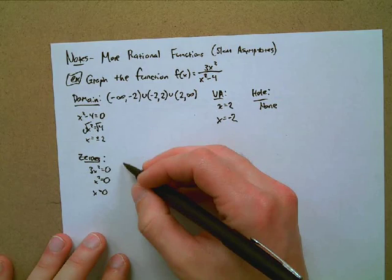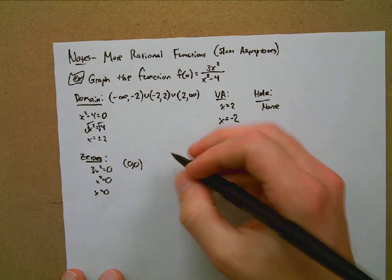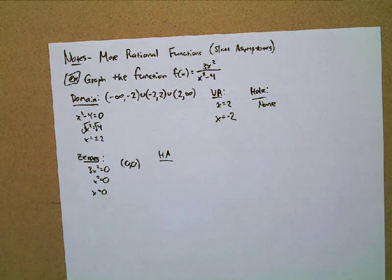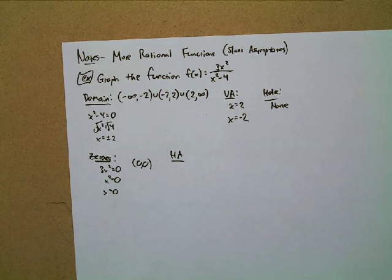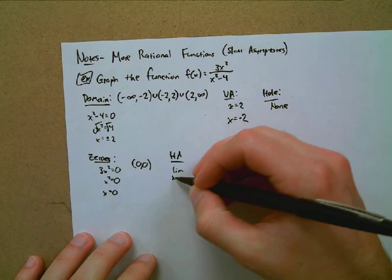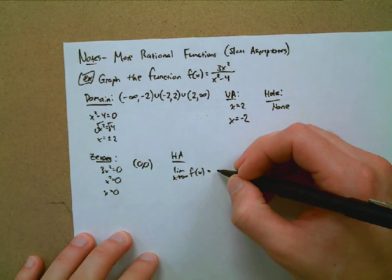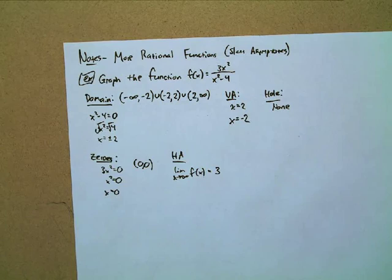Now let's identify the horizontal asymptote. Caleb, do we have a horizontal asymptote here? Yes. We take the limit as x approaches infinity of 3x² over x² minus 4. Since the degree of the top and bottom are the same, it's just the ratio of leading coefficients — which is 3. So the horizontal asymptote is y = 3.